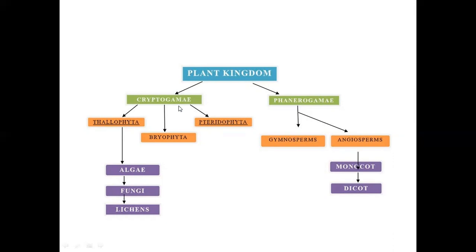Seedless plants are three: Thallophyta, Bryophyta, and Pteridophyta. Thallophyta has a thallus body — it has roots, stems, and leaves. In Thallophyta, we have algae, fungi, and lichens. This is the thallus body.